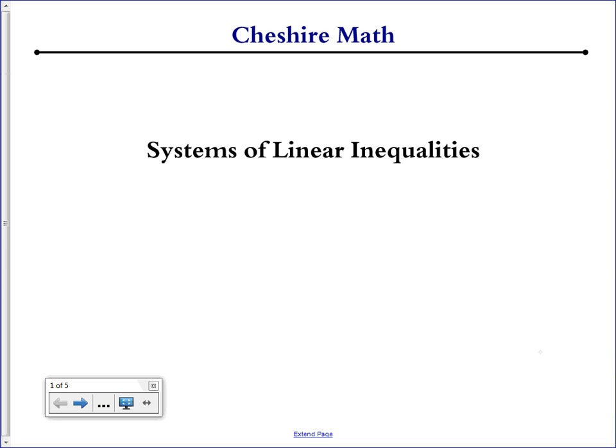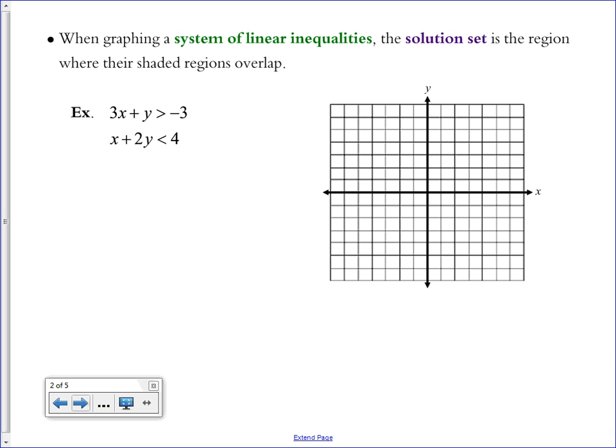This video is about systems of linear inequalities. When graphing a system of linear inequalities, the solution set is the region where their shaded regions overlap. So each inequality has its own shaded region, its own solution set, and where the shaded region of the first overlaps with the shaded region of the second is where the solution set for the entire system is located.